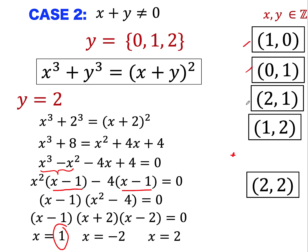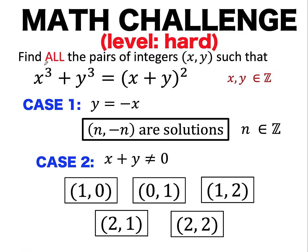So we now have 5 specific ordered pair solutions from case 2: (1, 0), (0, 1), (2, 1), (1, 2), and (2, 2), plus all solutions from case 1. This gives us all the integer pairs satisfying x cubed plus y cubed equals the quantity x plus y squared. The complete solution set includes any integer n paired with its additive inverse — for example (5, -5) or (-3, 3) — plus those 5 specific pairs from case 2. The problem is now solved.